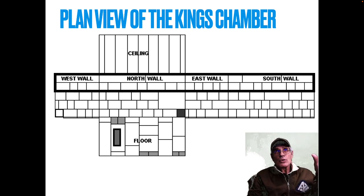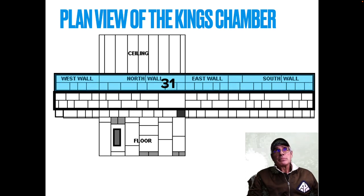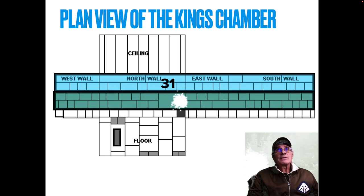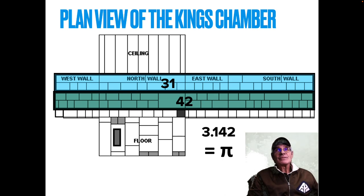If you take the top two courses — the north, south, east, west, and south walls — you find that there are 31 blocks. And then if you take the next two courses, you find there are 42 blocks. That's pi: 3.142. A simple revelation in the King's Chamber.